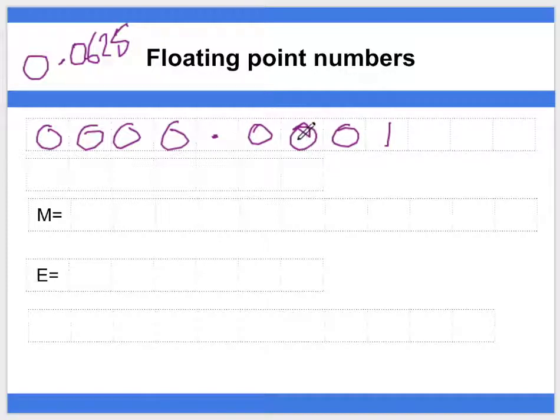so we're going to move this over by 1, 2, and 3 positions. So our final mantissa is going to be 0.1, and then corresponding zeros.